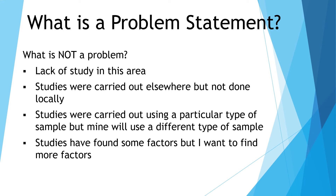The next one is: studies have found some factors, but I want to find more factors. The question is: at the moment, is this actually a problem? Research has shown factors affecting, for example, women's entrepreneurship — but is there a problem right now? If there is a problem, then it would be acceptable to further research and look for new factors. But examiners will ask: are the existing factors not sufficient to help people solve the problems? And what makes you think you can find more factors if a vast amount of research has already been done and found many factors?